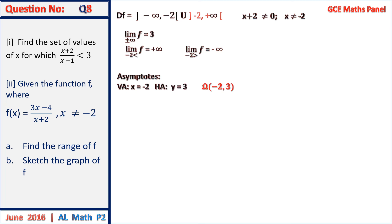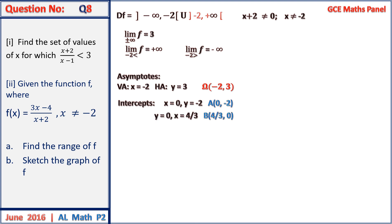The asymptotes are: vertical asymptote x equals minus 2 from the domain of definition, and horizontal asymptote y equals 3 from the limit as x tends to plus or minus infinity. The center of symmetry is therefore the point (minus 2, 3). For intercepts: when x equals 0, y equals minus 2, giving intercept (0, minus 2); when y equals 0, x equals 4 on 3, giving intercept (4/3, 0).